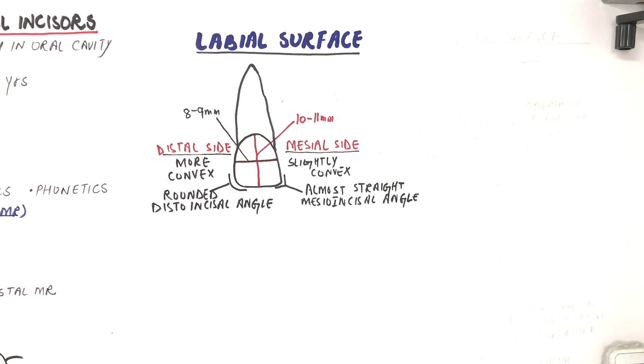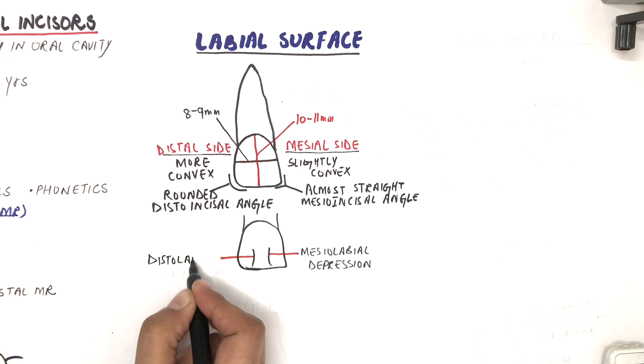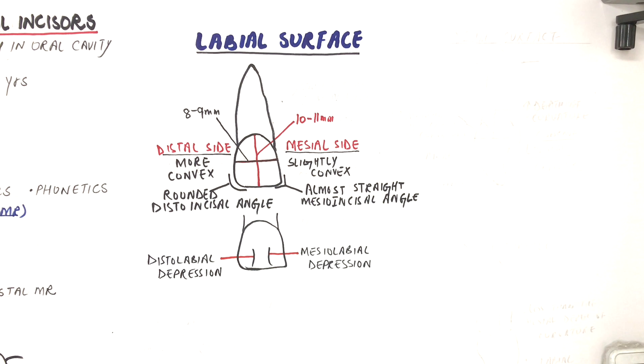Two shallow depressions which extend from the incisal edge towards the gingiva fade away at the middle third of the crown. They are termed mesiolabial and distolabial developmental depressions and they represent the division of the three labial lobes.